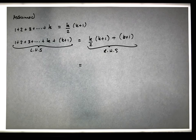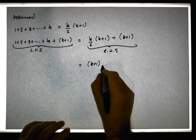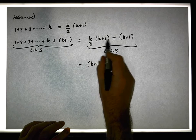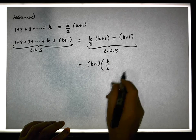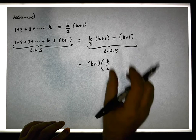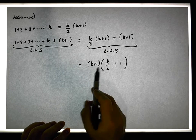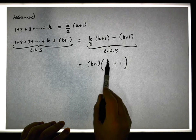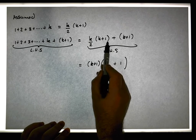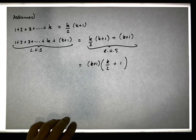So let's take out the k plus one that's common between both of these terms. When I take the k plus one out here, what's left behind is k over two, and when I take the k plus one out here, what's left behind is plus one. You can verify that multiplying back out gives us k plus one times k over two, plus k plus one.